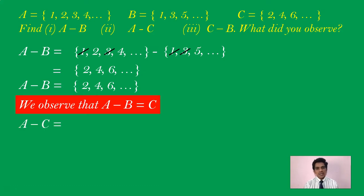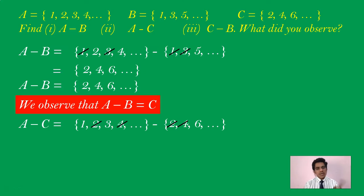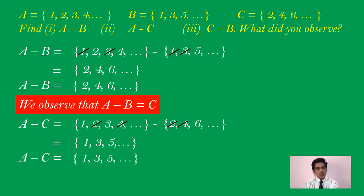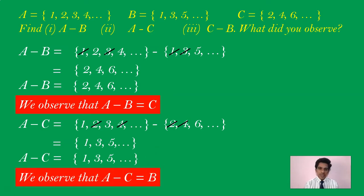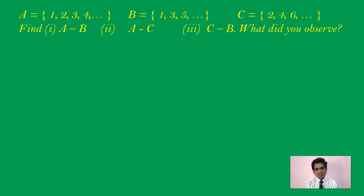Let us find A minus C, which is set of {1,2,3,4,...} minus set of {2,4,6,...}. Strike off the common elements — 2, 4, 6 and so on. What are we left with in the first set? We have 1, 3, 5, 7 and so on. So A minus C = {1,3,5,...}. We observe that A minus C = B. Natural numbers minus even numbers gives you odd numbers.